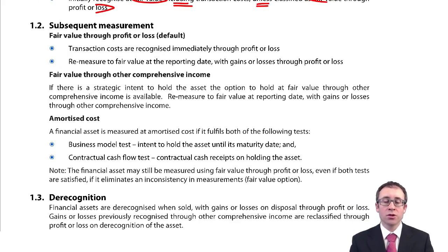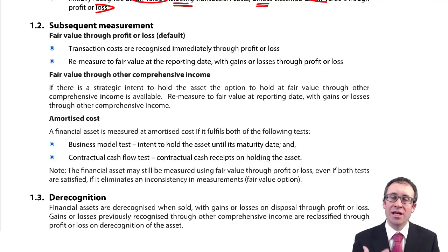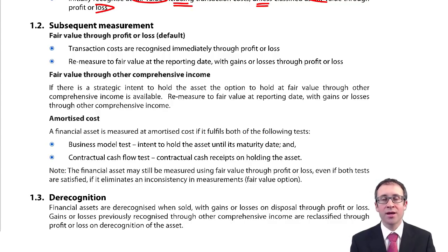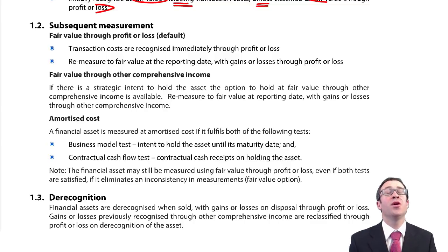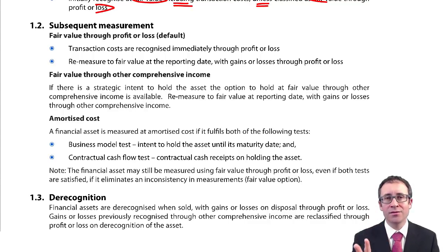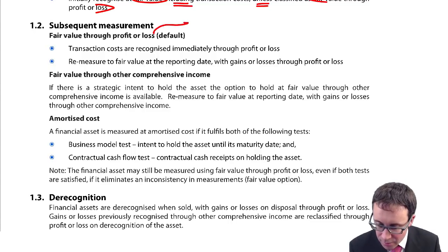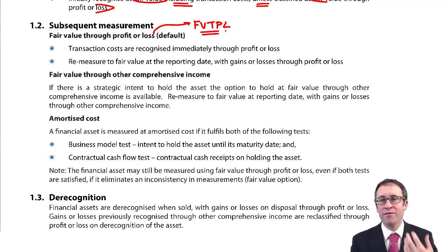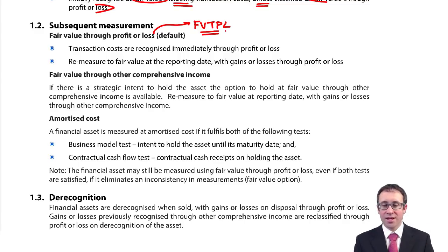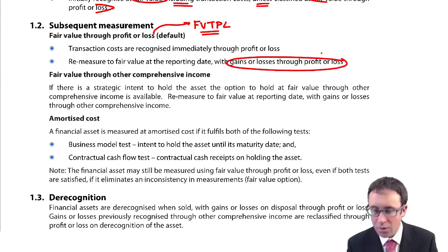Subsequent measurement depends upon how you have initially classified that asset. There are two ways of measuring it: either fair value or amortised cost. For your financial assets — your investment in equity, your investment in shares — you have to classify it by default as fair value through profit or loss, or FVTPL. That's the default option. You remeasure it to fair value at the reporting date and gains and losses go through profit or loss.